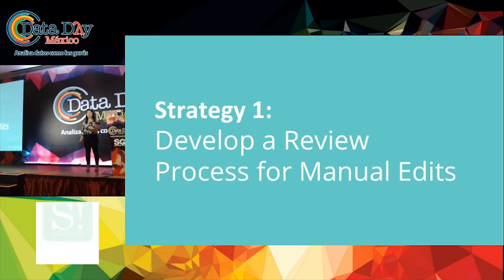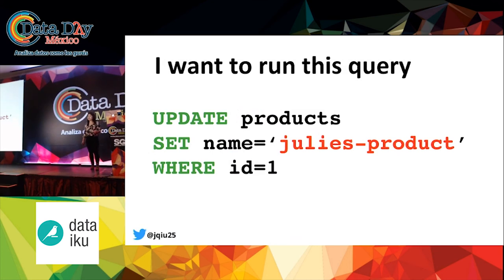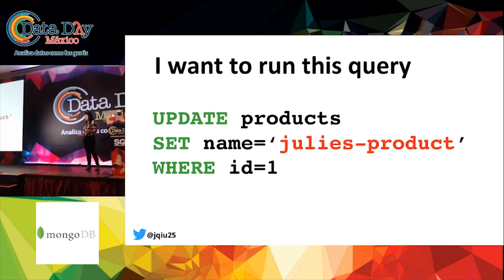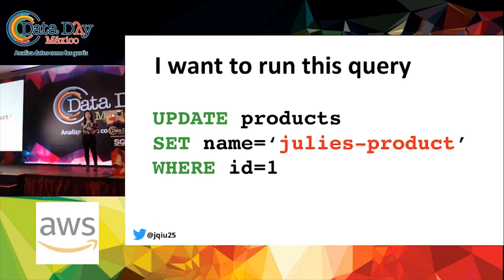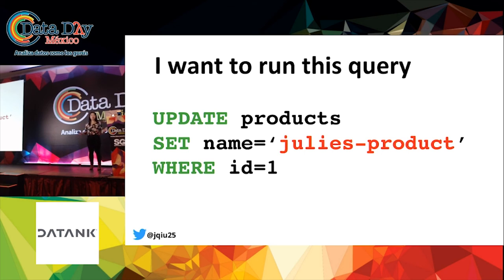The first strategy is pretty simple — it doesn't require any new code to be written or infrastructure to be built. It's simply developing a process for what we all know we should be doing already. Going back to that query for the marketing team: what I did was edit the field without any supervision at all. What we did at my company is start maintaining a Google spreadsheet to record manual SQL queries against production. This spreadsheet lets us collaborate and review each other's queries before executing them, and gives us a checklist of what we should be doing before running a query against production.